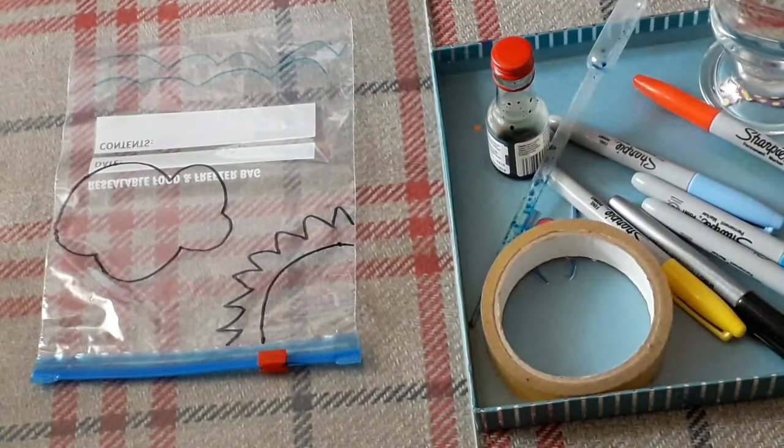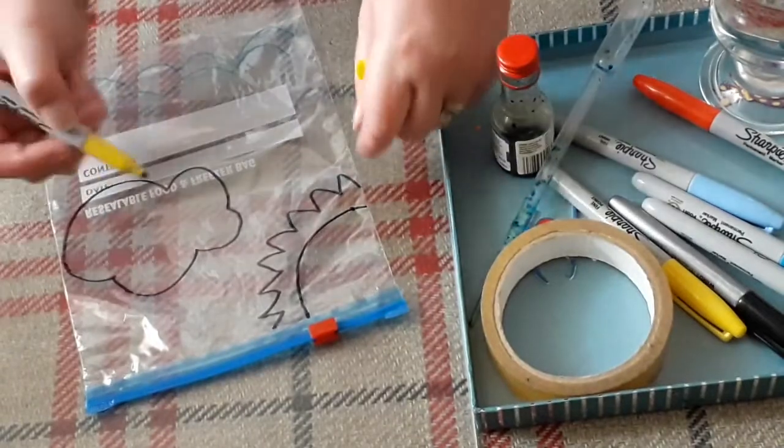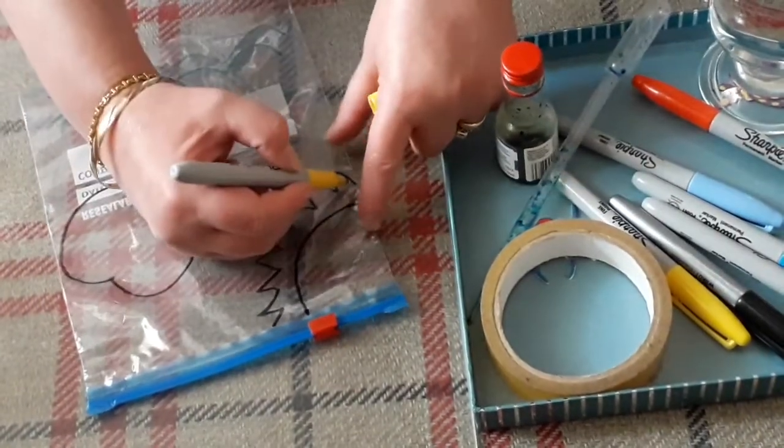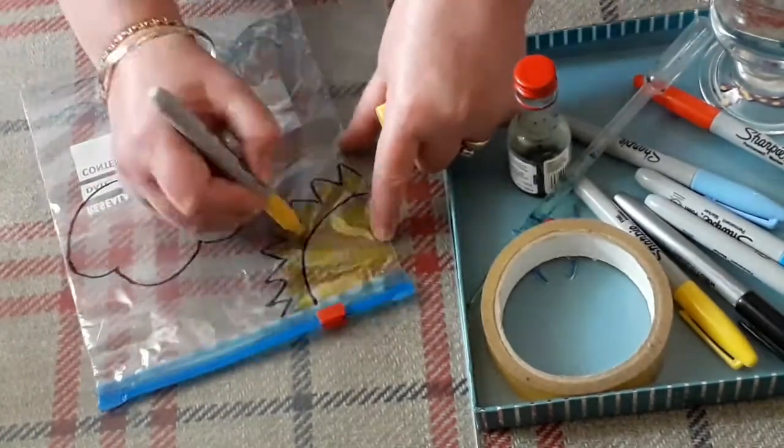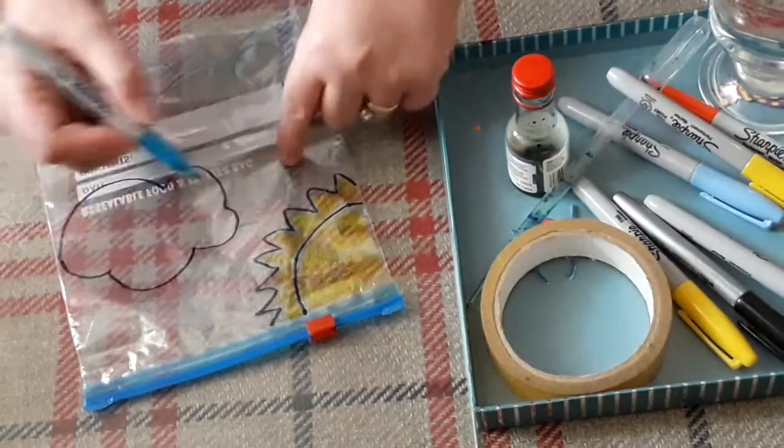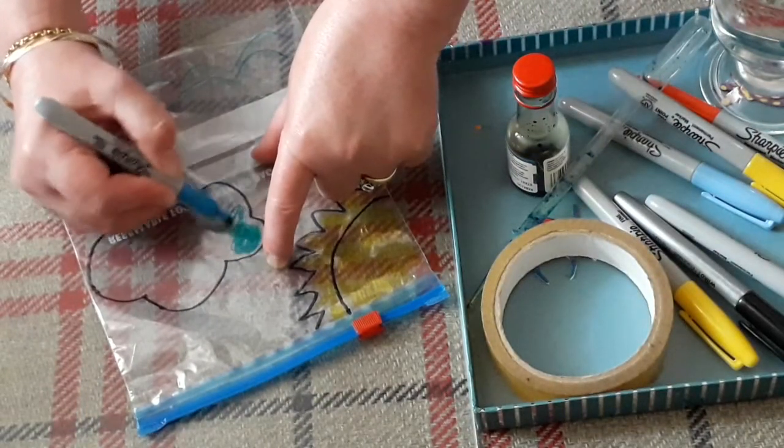Now you don't have to, but I think it's quite nice to color your sun and your cloud in, so I'm going to use a yellow felt tip, I'm going to take a blue and I'm just going to color in my cloud.